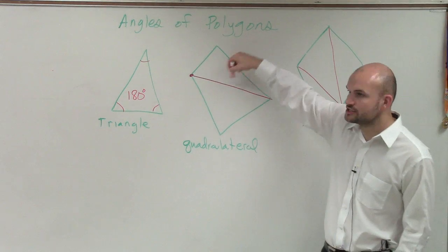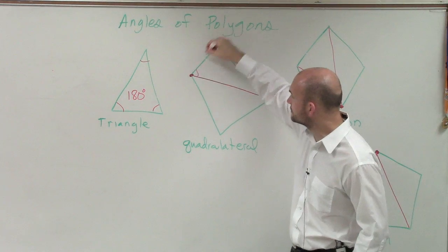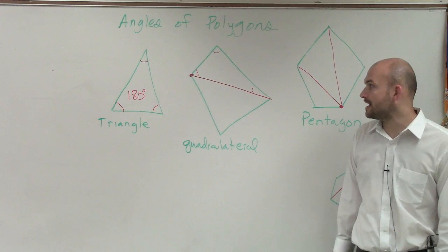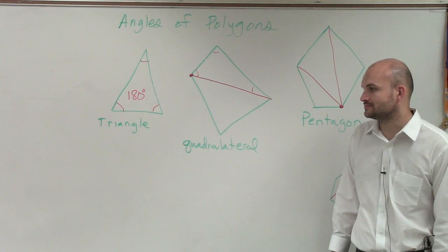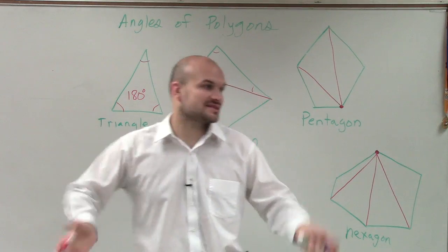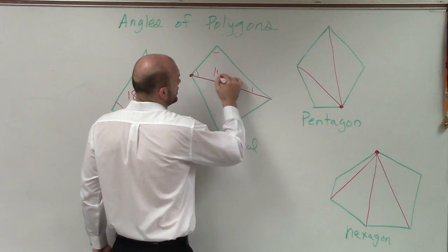Now, this triangle, what are all the angles of this triangle going to add up to? Asia, what would you say all the angles in that triangle add up to? 180, right? All triangles, all the angles, no matter what the size, shape, are always going to add up to 180 degrees.